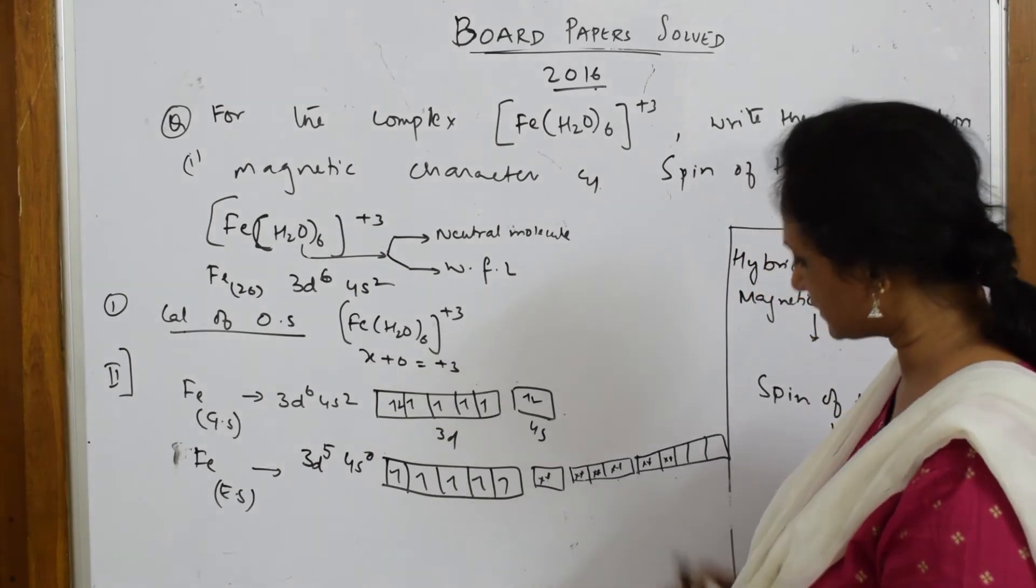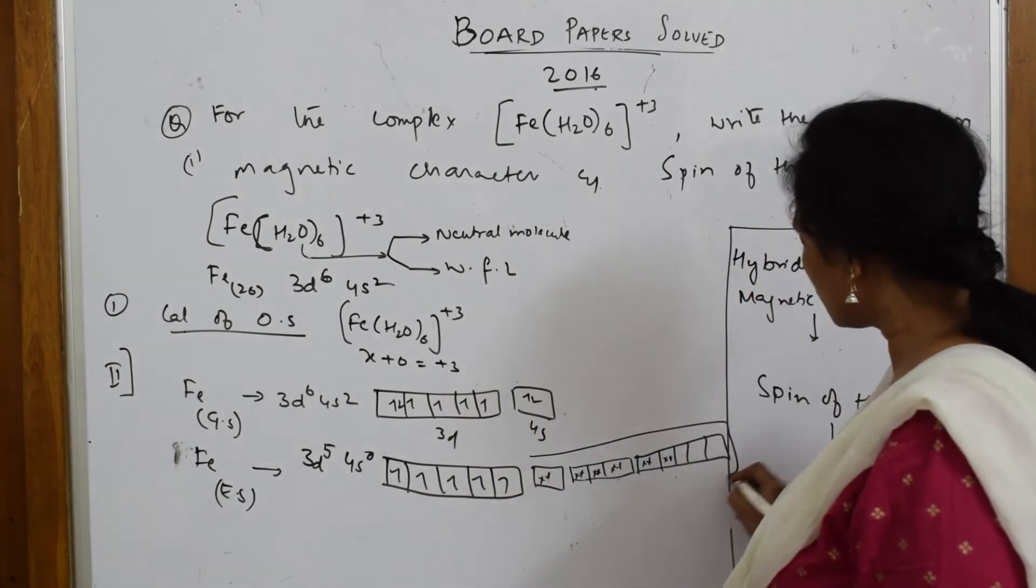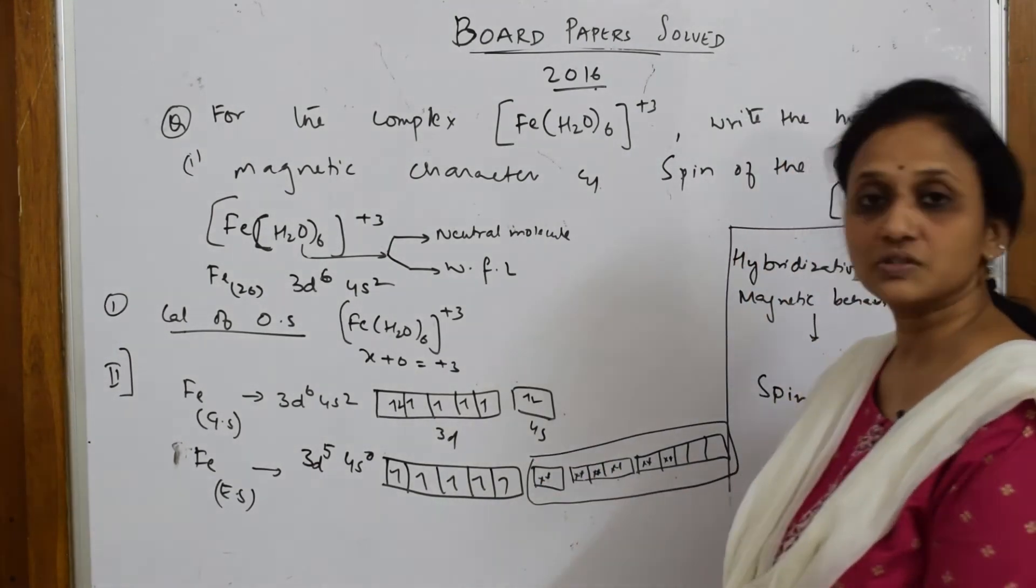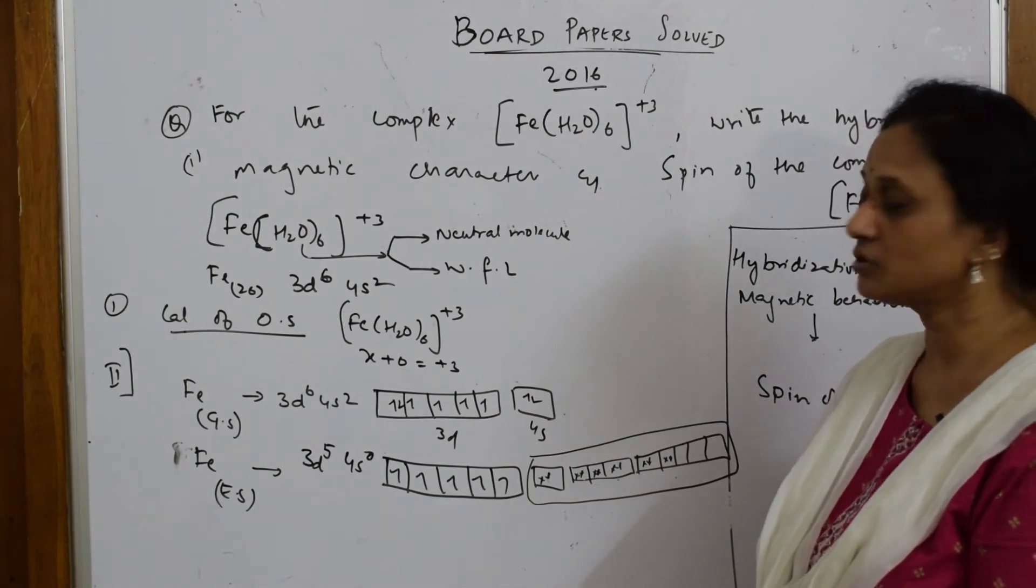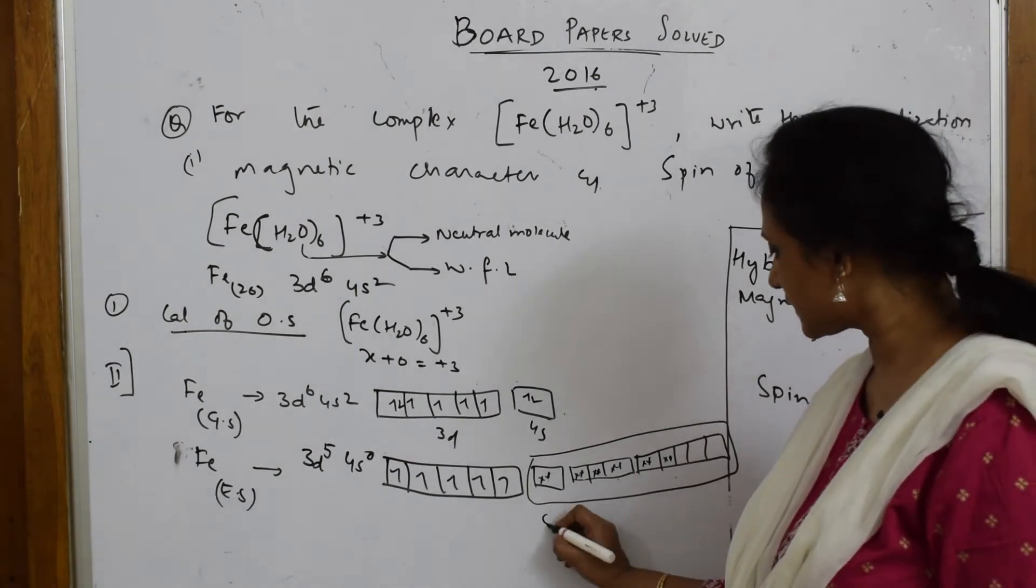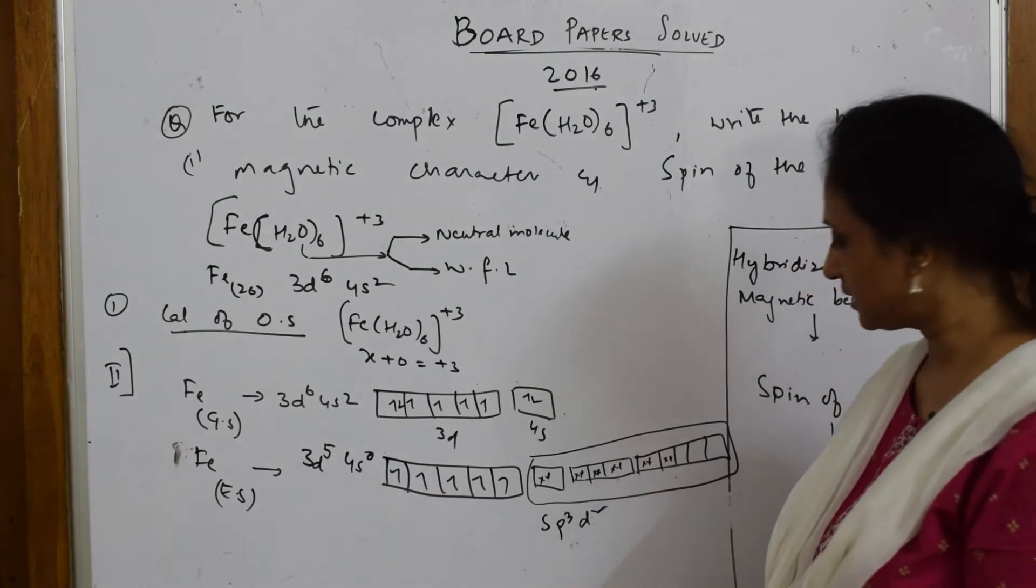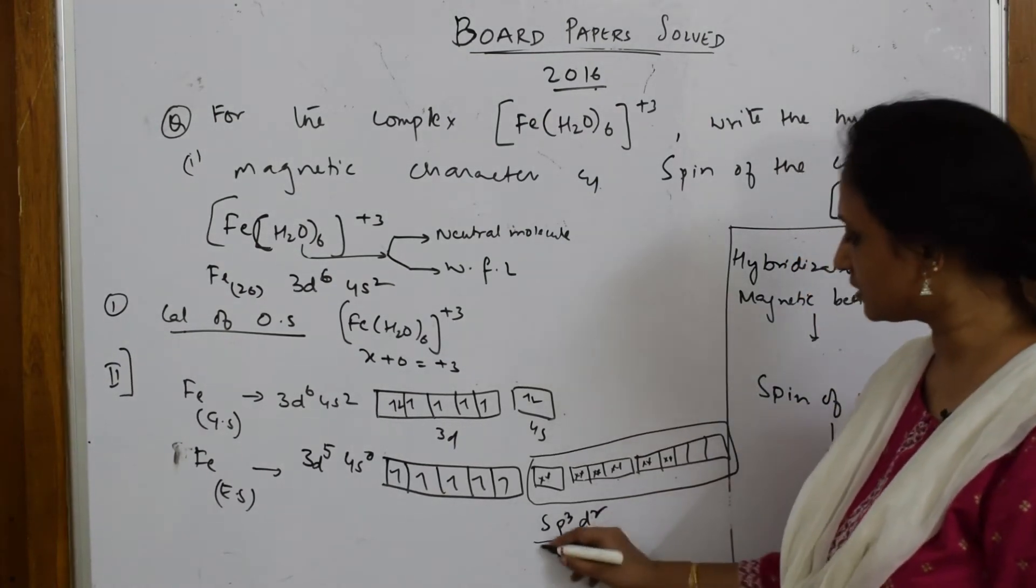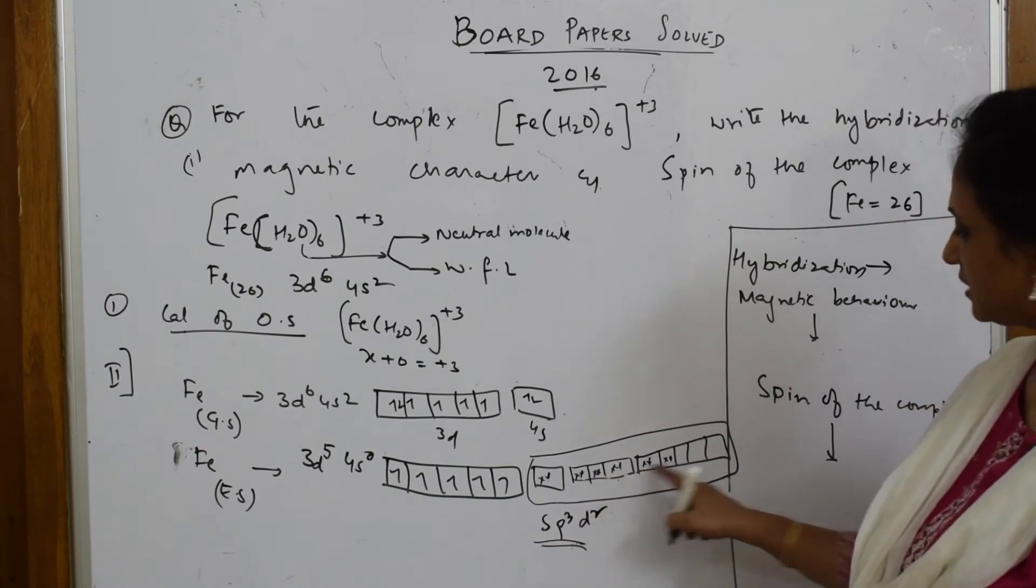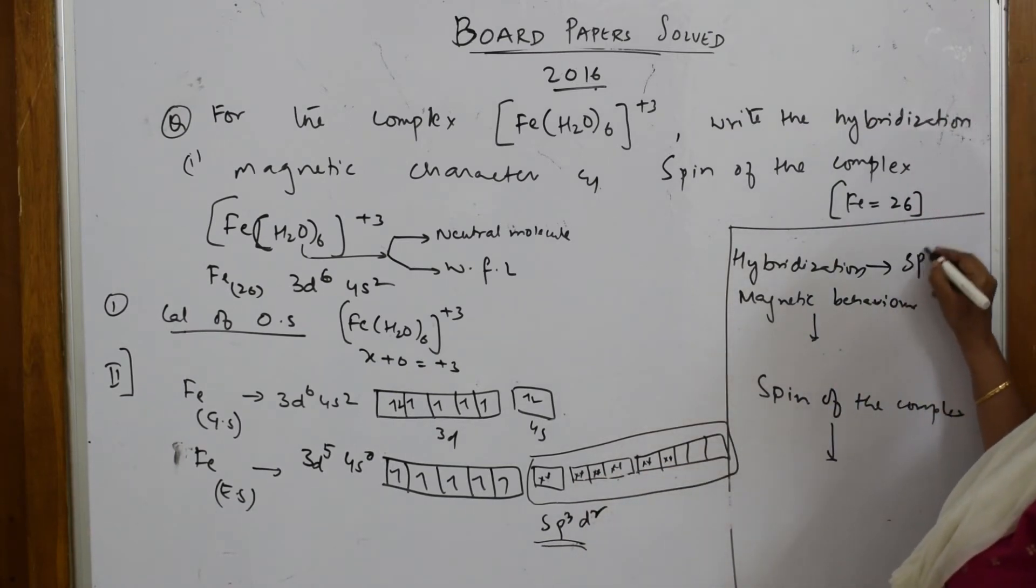I need two more, so I'm going to draw d orbitals after this. One, two, three, four, five, six - all these are going to hybridize together to form a hybrid and form the complex. This is s, this is p3, this is d2.